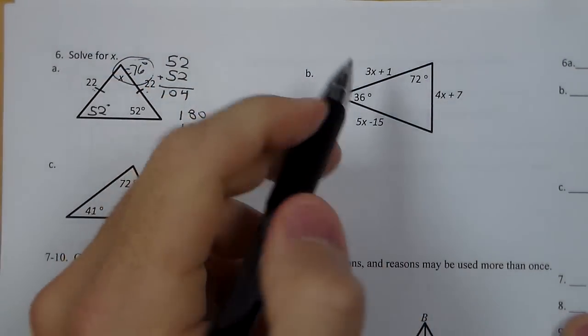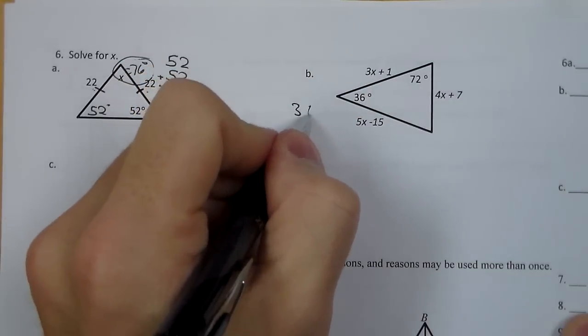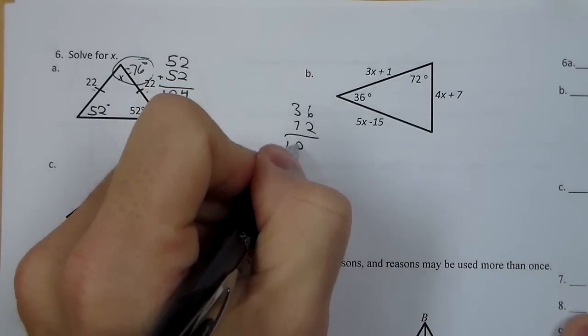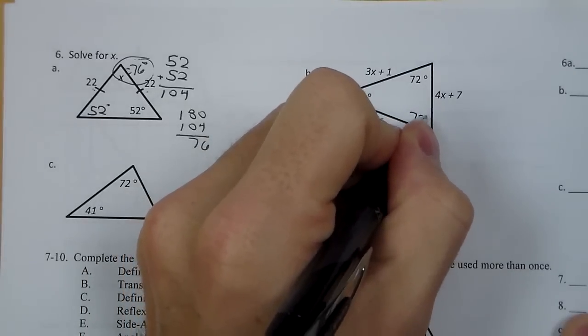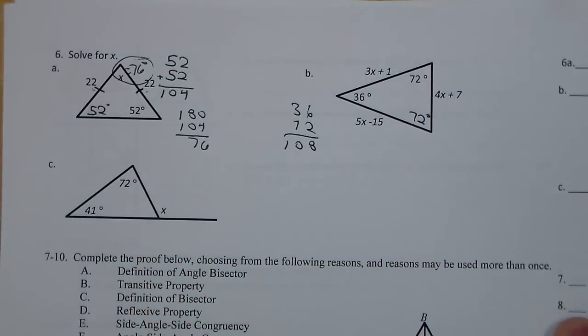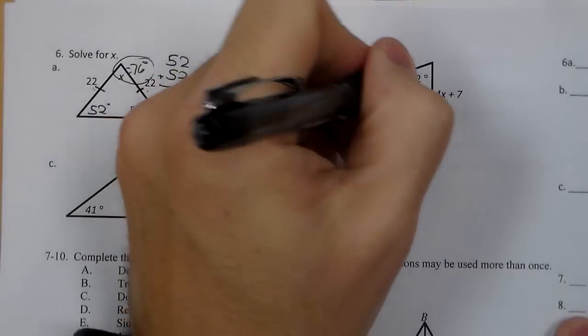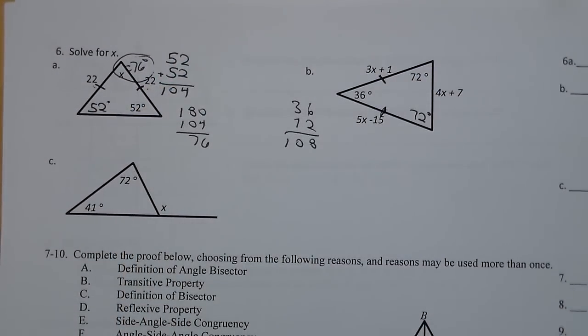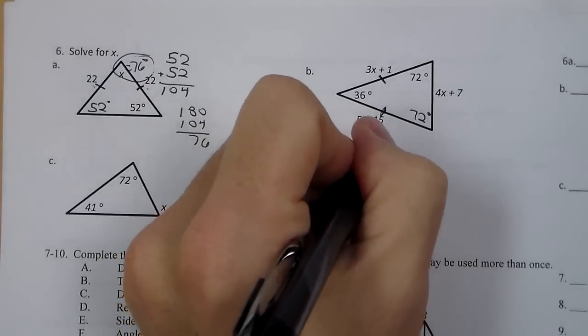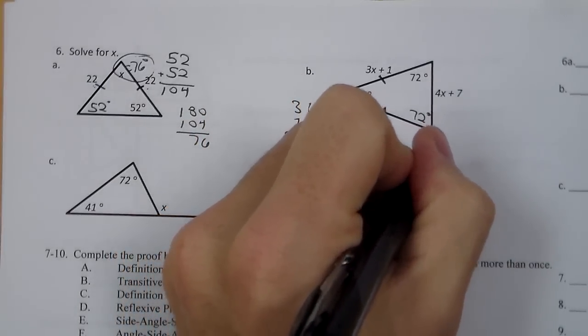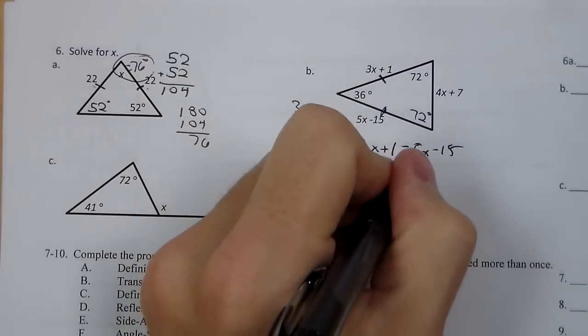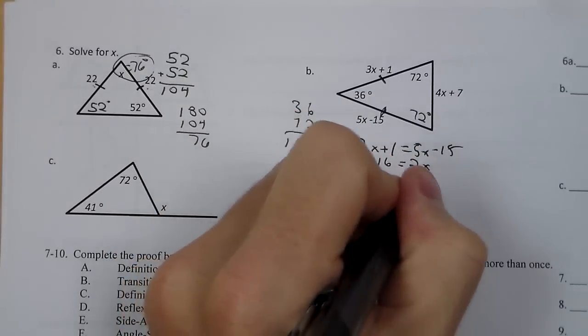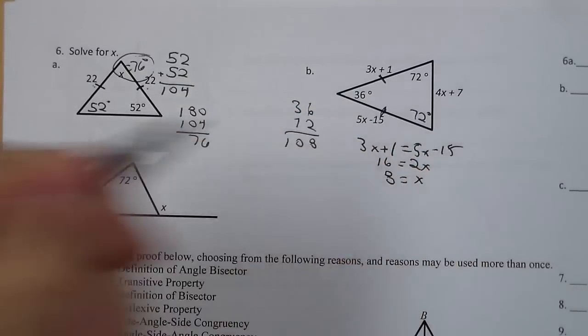So then we go to B, 36 and 72. I add those together. I got 108, which puts 72 degrees there. Kind of like 6A, these match to make these two sides congruent. 4X minus 7 is a distractor put there. I'm going to do 3X plus 1 equals 5X minus 15, 2X equals 16, and X equals 8.